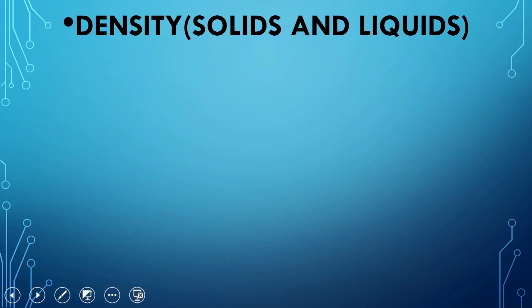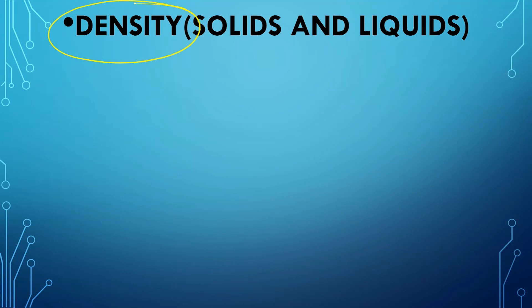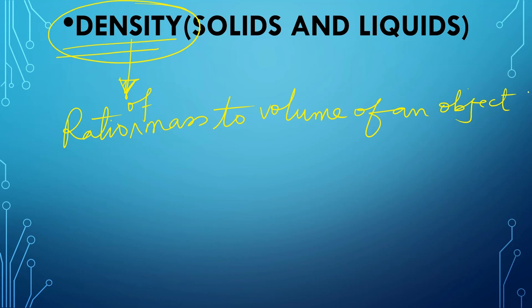Now the first thing is to talk about density. When I was taking fundamental and derived quantities, we measured density as one of the derived quantities. I want to study density in detail today and see how it is applicable to the state of matter. By definition, density is the ratio of mass to volume of an object.